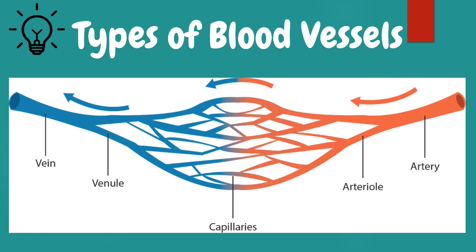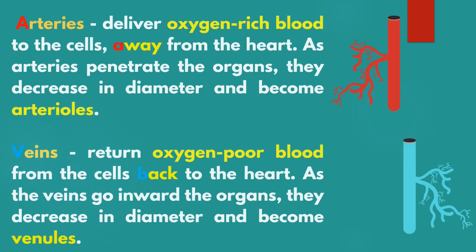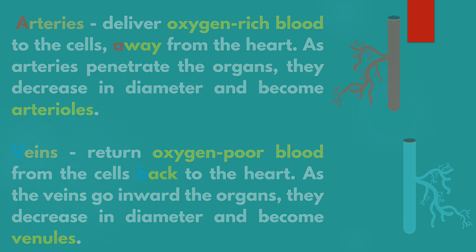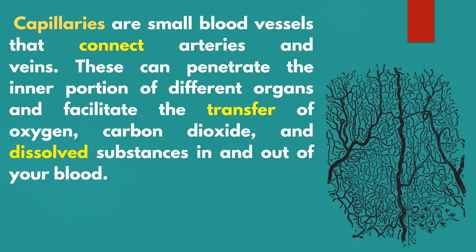Now we proceed to the second part of the circulatory system: the different types of blood vessels. Arteries deliver oxygen-rich blood to the cells, away from the heart. As arteries penetrate the organs, they decrease in diameter and become arterioles. Veins return oxygen-poor blood from the cells back to the heart, and as veins go inward through the organs they decrease in diameter and become venules.